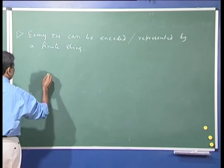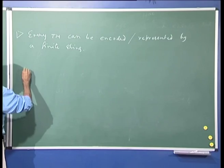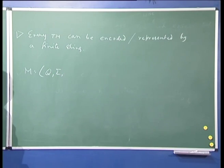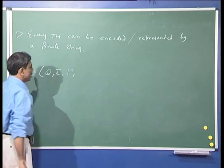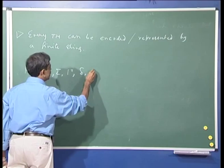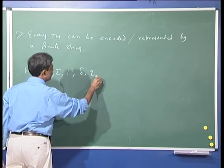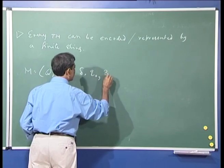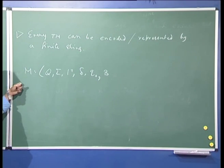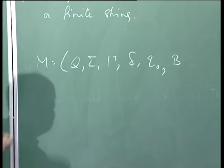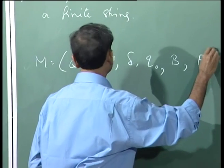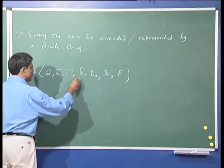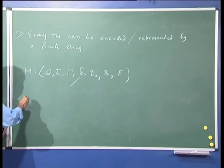A Turing machine is defined by: a set of states, input alphabet sigma, tape alphabet gamma, a transition function delta, an initial state, a blank symbol, and a set of final accepting states. Now, recall that delta can be represented by means of a set of quintuples.